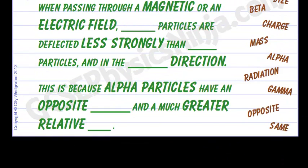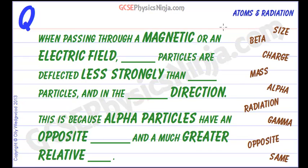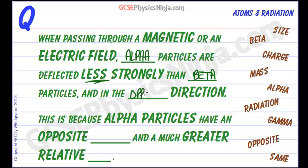So let's take a look at how alpha and beta particles behave when we put them into a magnetic or an electric field. When passing through a magnetic or an electric field, we find that alpha particles are deflected less strongly than beta particles, and alpha particles deflect in the opposite direction to beta particles. This is because alpha particles have an opposite charge.